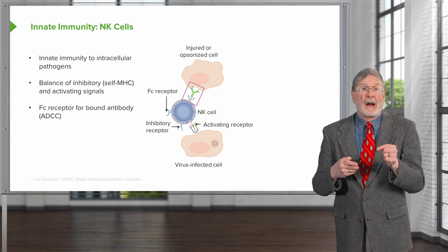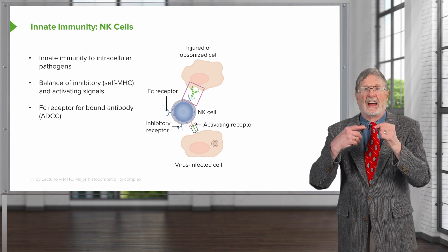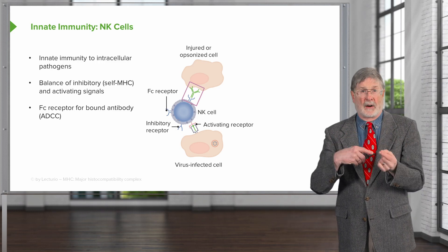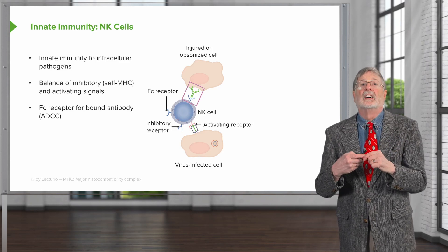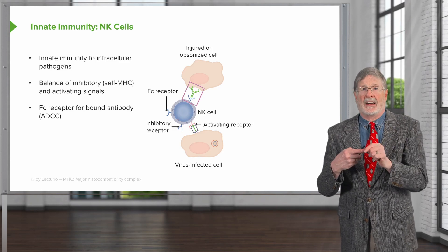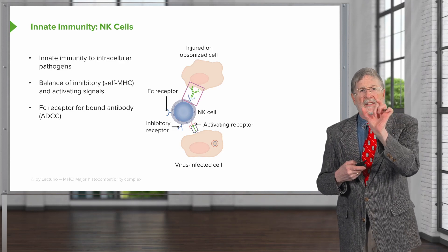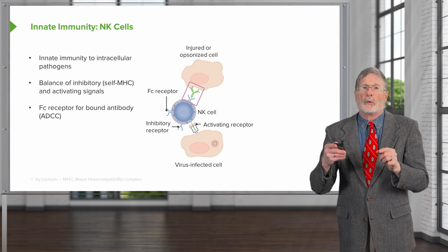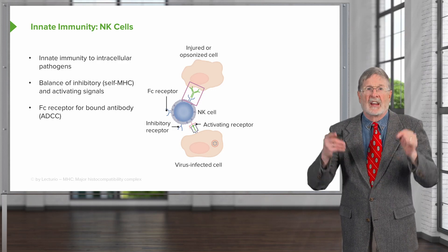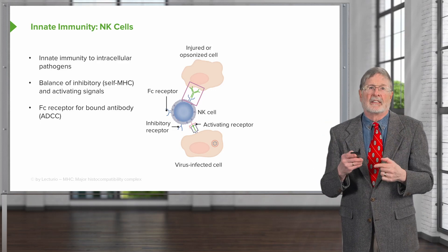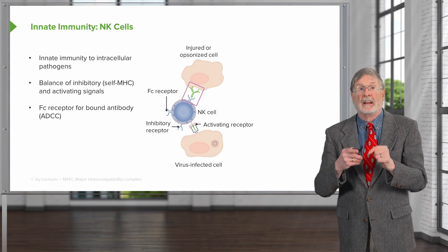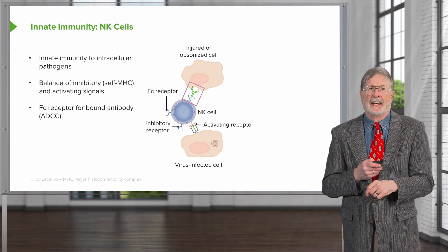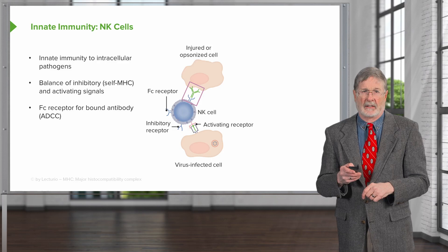NK cells also have on their surface FC receptors, so they recognize the constant region fragment of bound antibody. If antibody is bound to a particular target, they will come up, bind with their FC receptors, and kill. This is called antibody-dependent cell-mediated cytotoxicity, or ADCC, as you see on the screen.